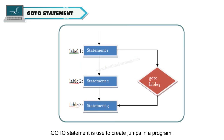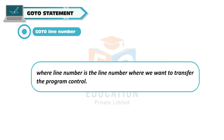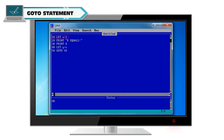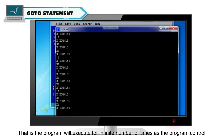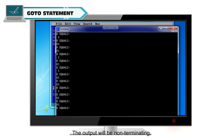The GOTO statement is used to create jumps in a program. The syntax is: GOTO line number, where line number is where program control is transferred. For example: 10 LET x = 1, 20 PRINT "x =", 30 PRINT x, 40 LET y = x, 50 GOTO 10. After executing statement 40, control moves to line 50, which transfers it back to line 10. The program executes an infinite number of times, giving non-terminating output.